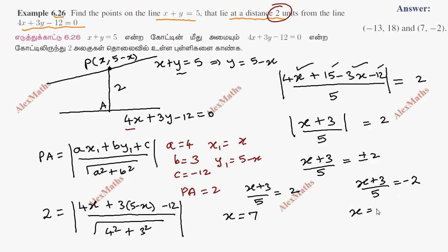y equals 5 minus x. So 5 minus 7 is minus 2. 5 minus minus 13 is 18. So we get the point x, y: 7, minus 2 is one point.